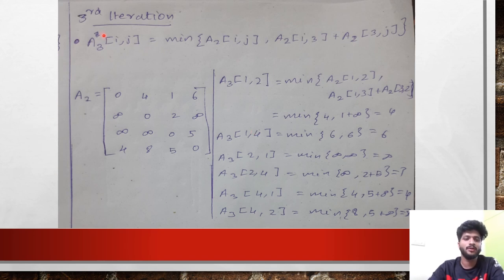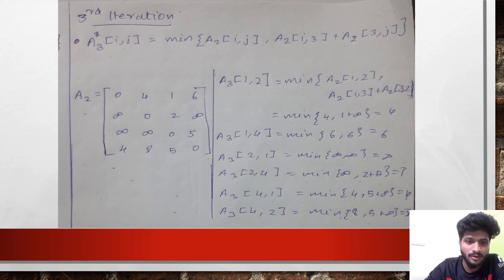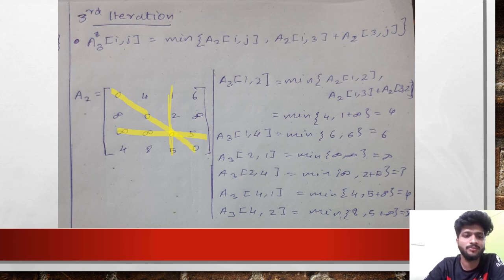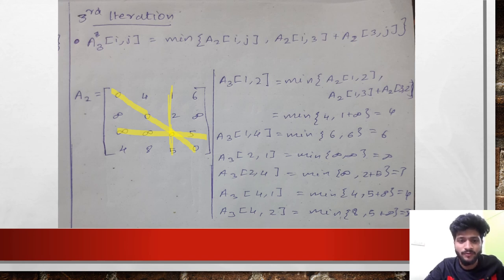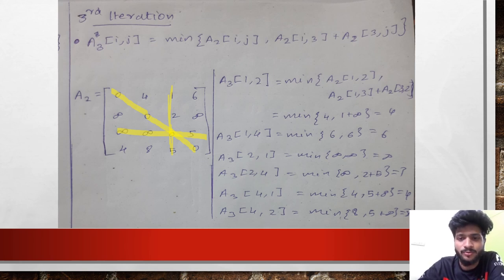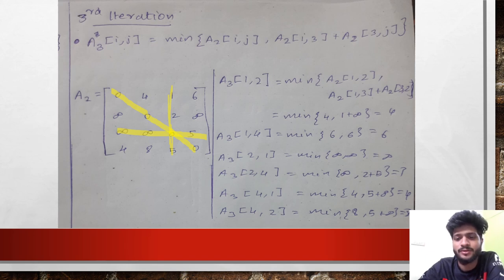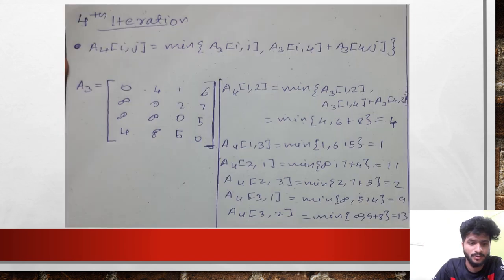In the third iteration, we obtain matrix A3 from A2 by fixing the third row and third column, keeping diagonal elements unchanged, and finding all other elements using the formula: A3[i,j] = minimum of A2[i,j] and A2[i,3] + A2[3,j]. For example, A3[1,2] = minimum of A2[1,2] and A2[1,3] + A2[3,2] = minimum of 4 and infinity, which is 4. Similarly we find all elements of A3.